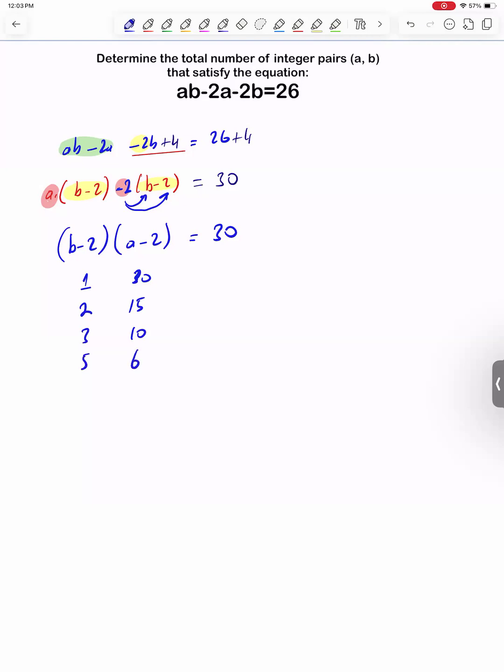Since it is an ordered pair, we can switch the order: 6 times 5, 10 times 3, 15 times 2, 30 times 1.